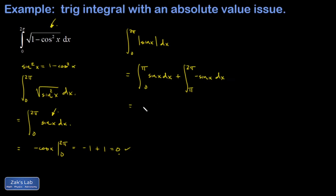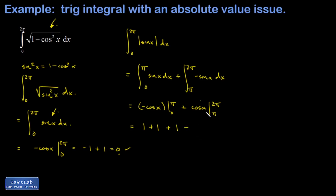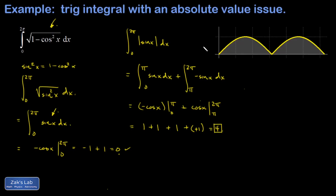Now we can guess antiderivatives and evaluate across the limits of integration. For the first part, plugging in the upper limit gives −(−1) = +1, then subtracting −cos(0) adds another 1. For the second part, cos(2π) = 1, and then we subtract cos(π) = −1, adding another 1 each time. This turns into 1 + 1 + 1 + 1 = 4, which makes a lot more sense than zero.